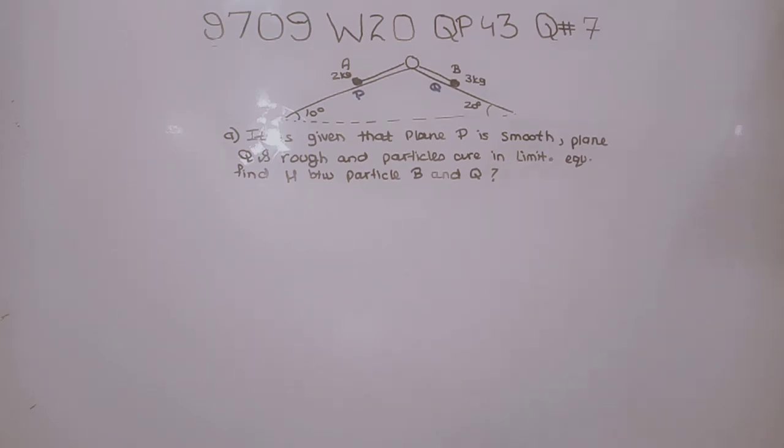Hi, this is A Level Mathematics Code 9709, Winter 20, Question Paper 4, Variant 3, and this is the last question, question number 7 of this paper.